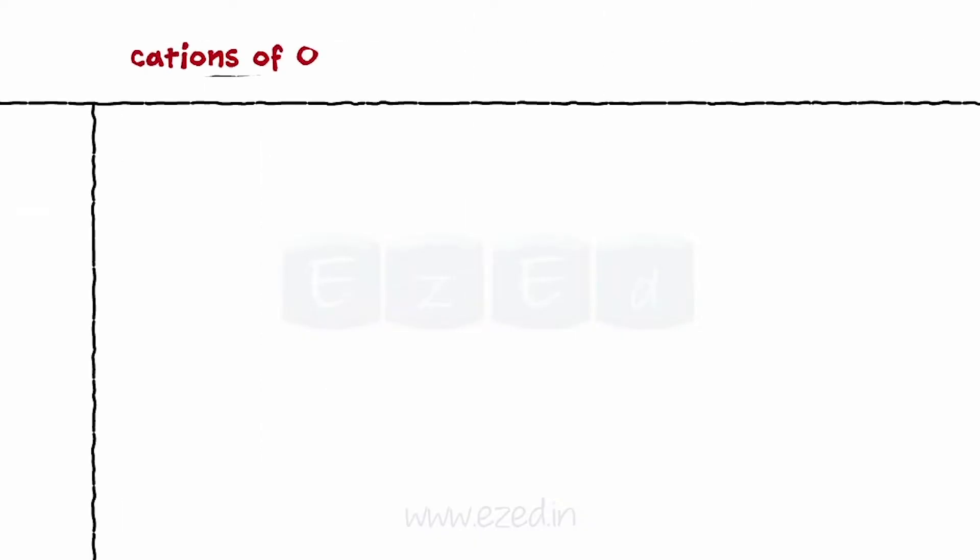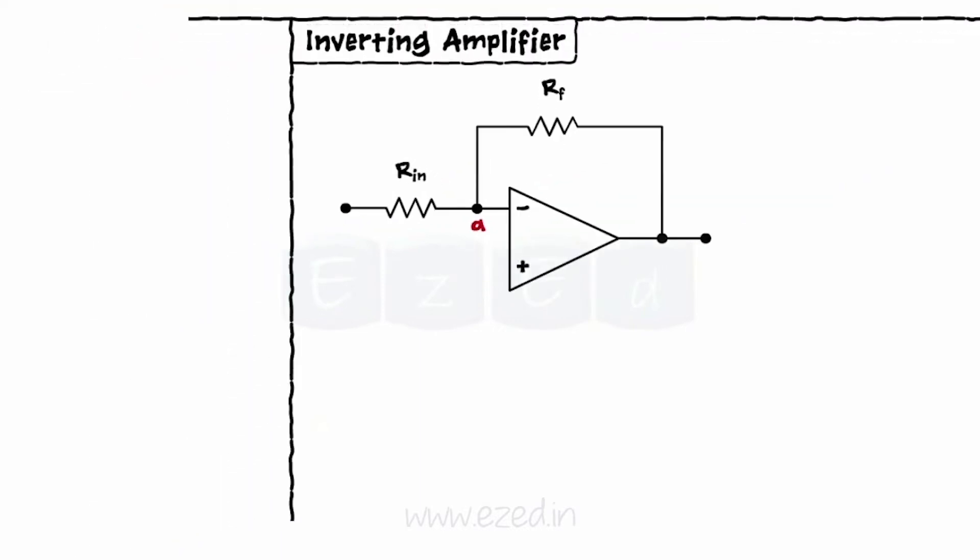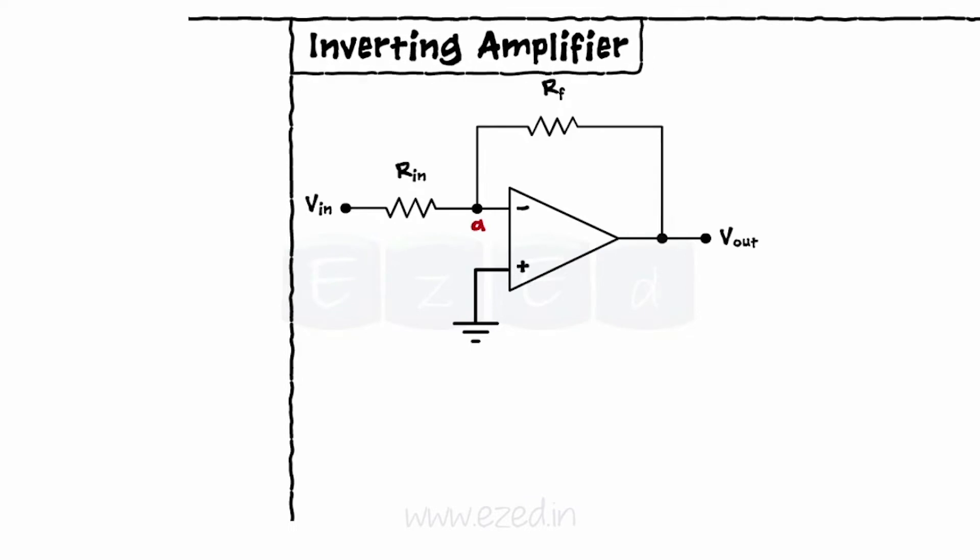Let's start with the use of an op amp as an inverting amplifier. When the input is given to an inverting terminal and a non-inverting terminal is connected to the ground, an op amp works as an inverting amplifier.